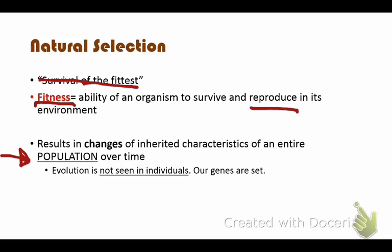This is super important — you need to know that natural selection happens to populations. Evolution is not seen in individuals. One animal does not evolve. The whole population changes over time, and that change in the population is what evolution is.